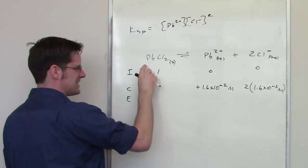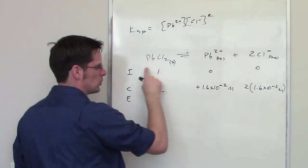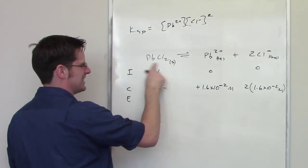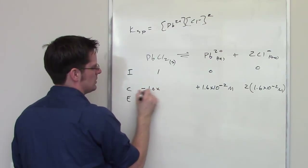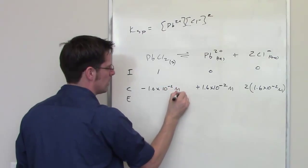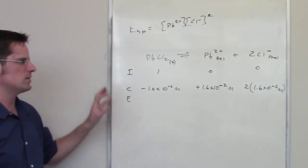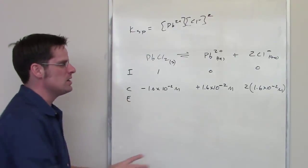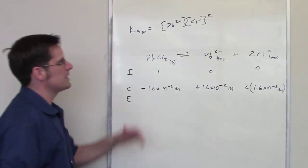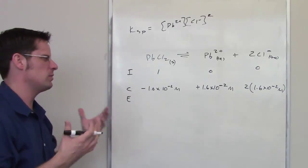Now, because this is present in a 1 to 1 to 2 ratio, it also follows that the lead chloride is going to decrease by that same amount. So I'm going to have negative 1.6 times 10 to the negative 2 molar as being my change amount. This is what molar solubility does and how it fits into these ice tables. Molar solubility goes here, Ksp goes up here. Hopefully we can keep those straight.